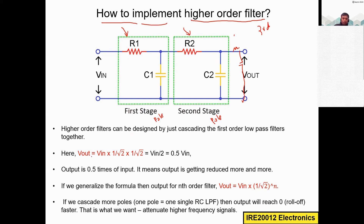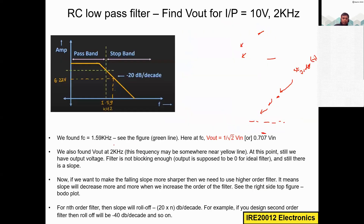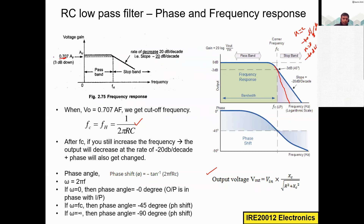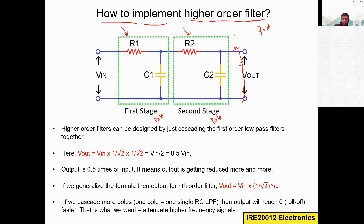For the second order filter, v_out equals v_in times 1/√2 — that is 0.707 times v_in for the first order filter. For the second order filter, v_in is the same but we get one more multiplication by 1/√2. So v_out = v_in × (1/√2) × (1/√2), which gives v_in / 2, that is 0.5 times v_in.